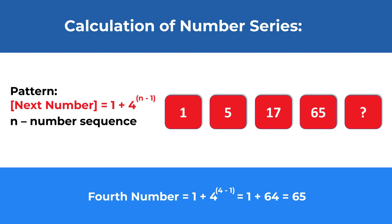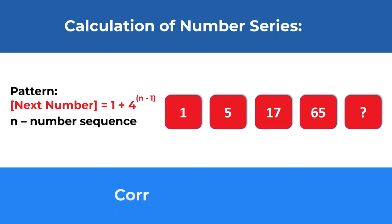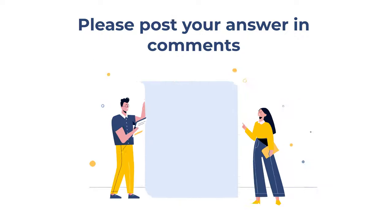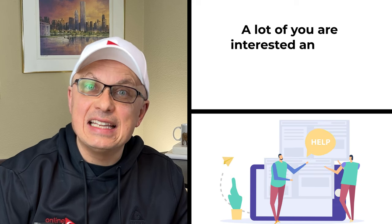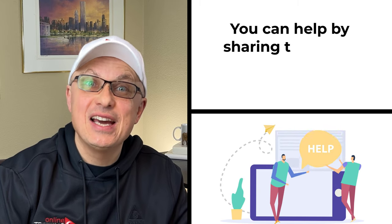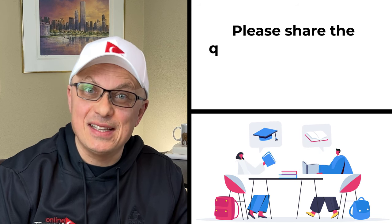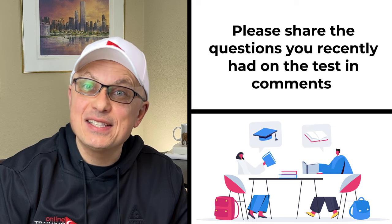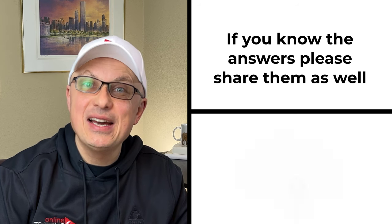The fourth number is 1 plus 4 to the power of 3, which equals 1 plus 64, equals 65. The missing number is 1 plus 4 to the power of 4, which equals 1 plus 256, equals 257. So the correct choice is choice B, 257. One of the ways you can help others is by sharing the latest questions you encounter on assessment tests along with how you answered them.